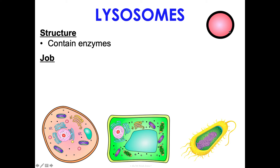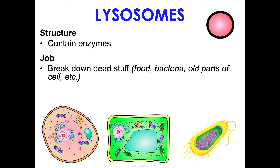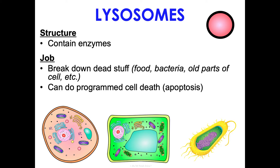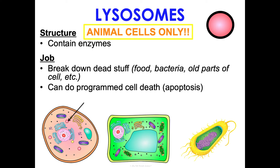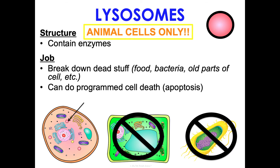Lysosomes contain a bunch of enzymes, which allows them to break down dead material in the cell — food waste, invading bacteria, or old worn-out parts of the cell. Lysosomes can also carry out programmed cell death, known as apoptosis — essentially cell suicide — which is an incredibly important thing our cells can do. Lysosomes are generally associated with animal cells only, though there is slight controversy among cell biologists about whether some plant cells may have them.